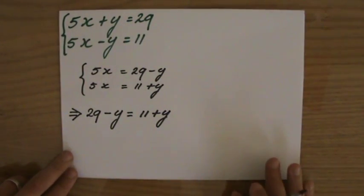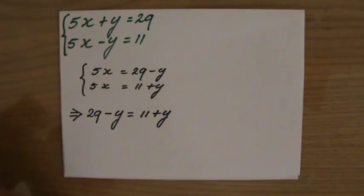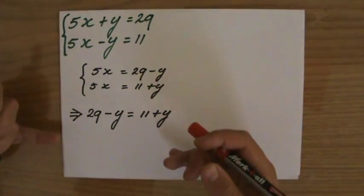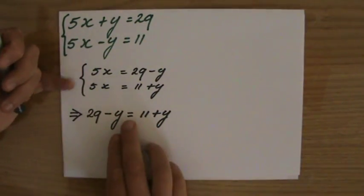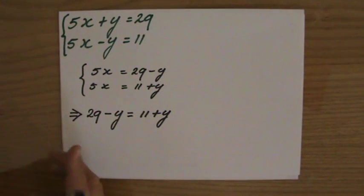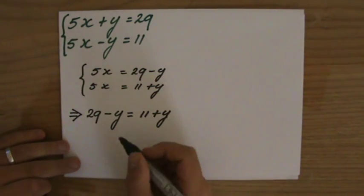5x equals 29 minus y. 5x also equals 11 plus y. Then I can make that conclusion that 29 minus y has to be equal to 11 plus y. I'm going to continue now. I'm going to do it relatively quickly.